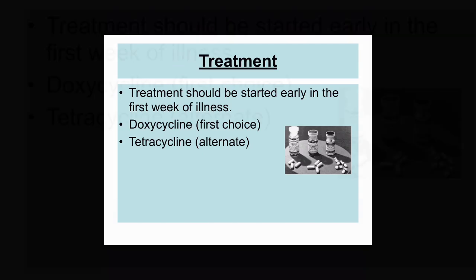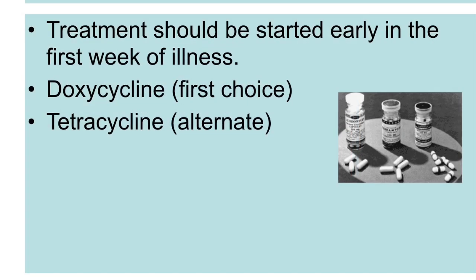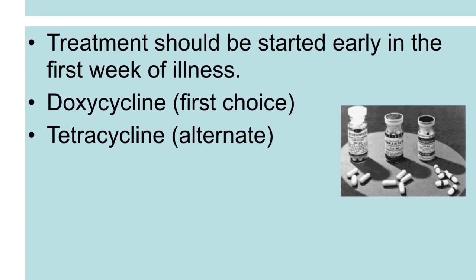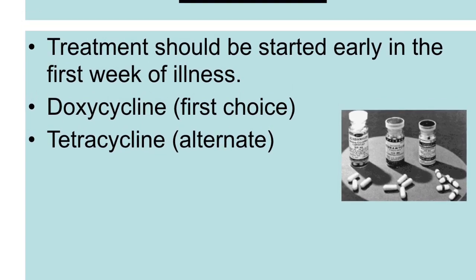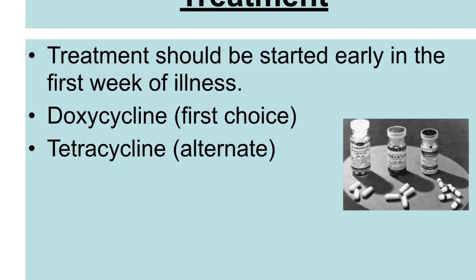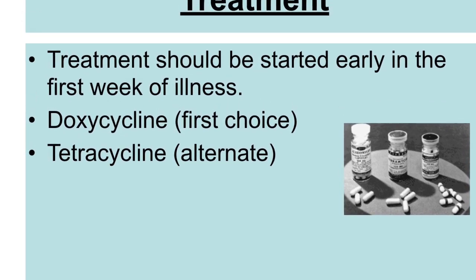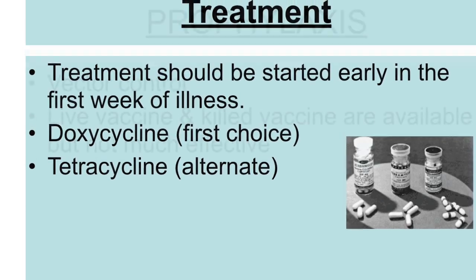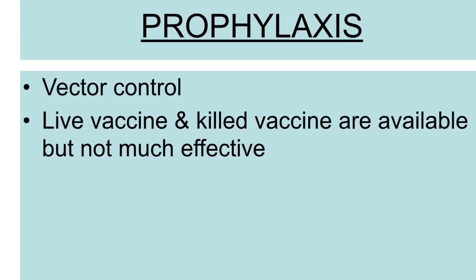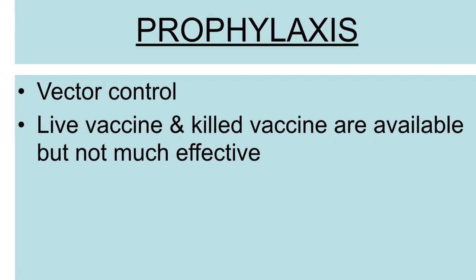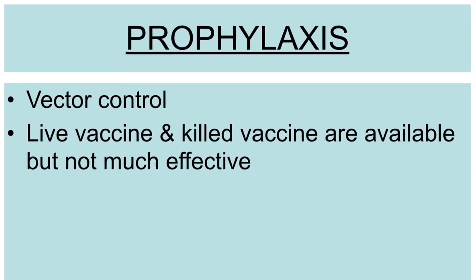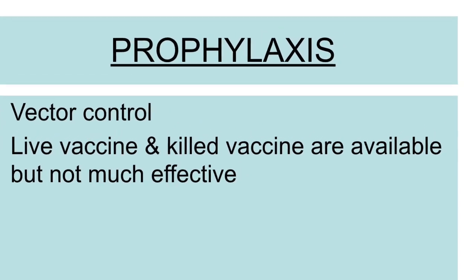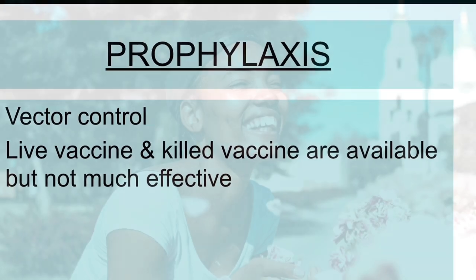As for treatment, the first line of treatment is doxycycline, and treatment should be started early in the first week of illness. If doxycycline is not the first choice, tetracycline may be used. Vector control is the number one method of prophylaxis. There is a live vaccine as well as a killed vaccine available, but they are not very effective.